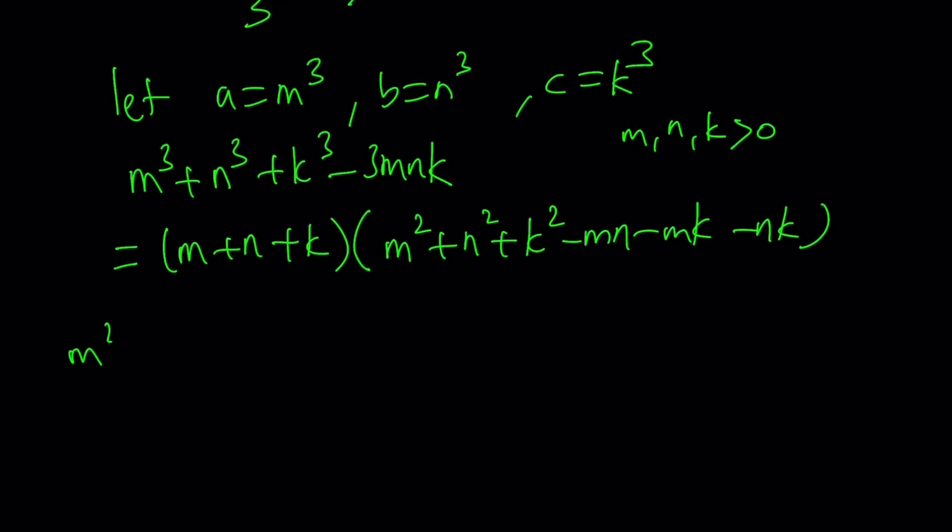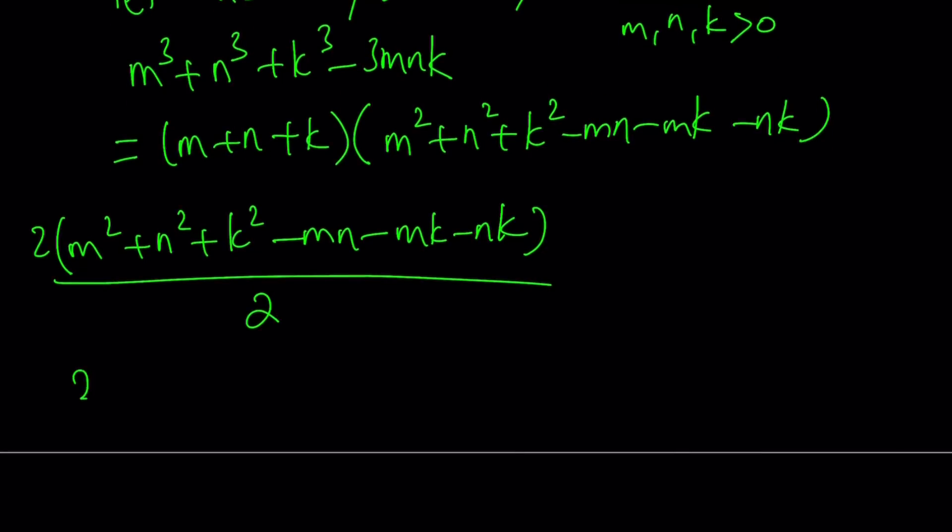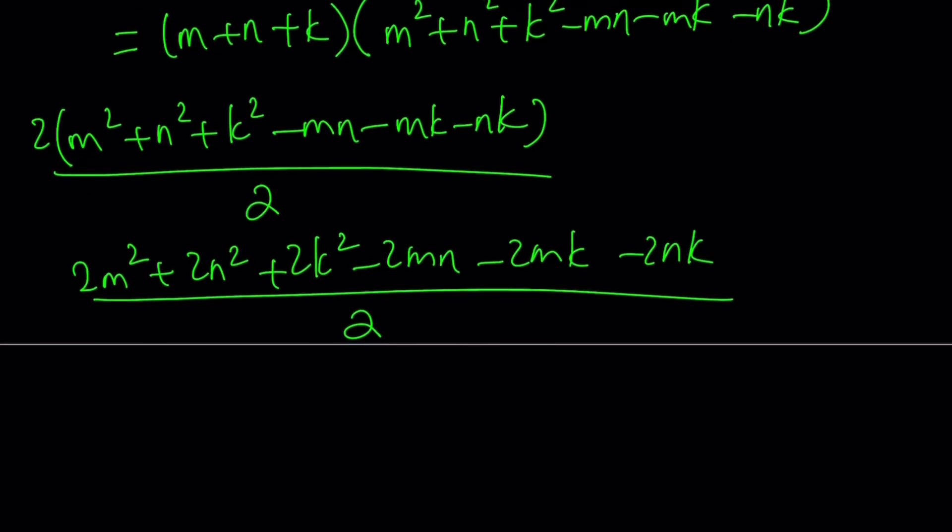Now, what can we do with this type of expression? Well, I have something like this, the sum of squares minus the two-by-two products. And now this can be written in a really interesting way. I'm going to go ahead and multiply this by 2 and divide by 2. So the numerator is going to give me the following: 2M squared plus 2N squared plus 2K squared minus 2MN minus 2MK minus 2NK. And I'm going to divide that by 2 to balance out the equation.